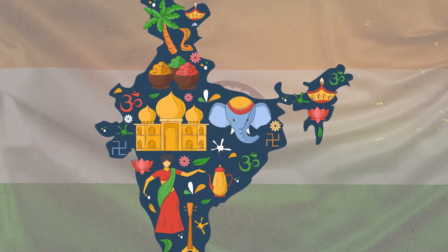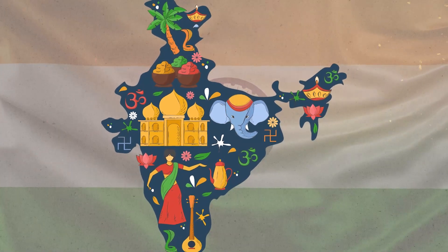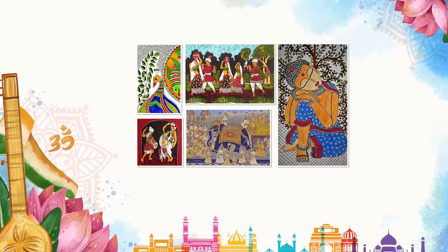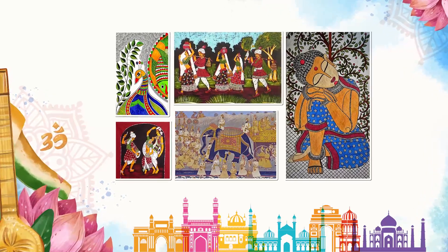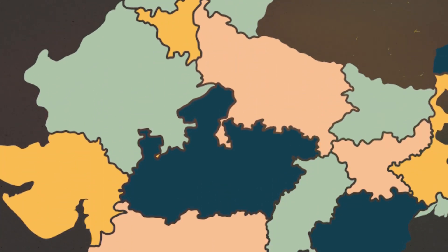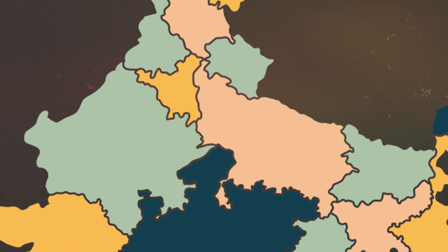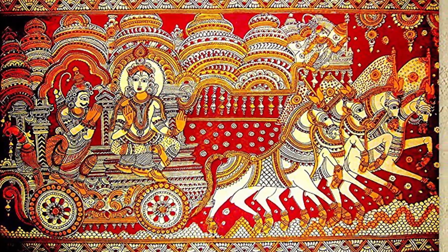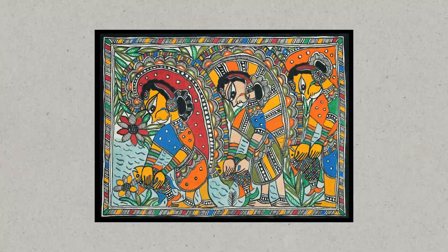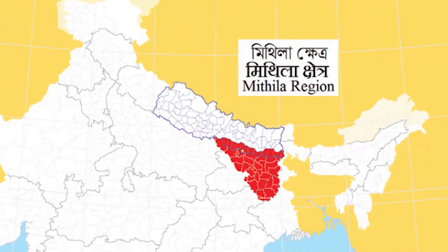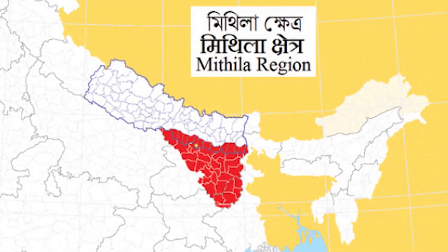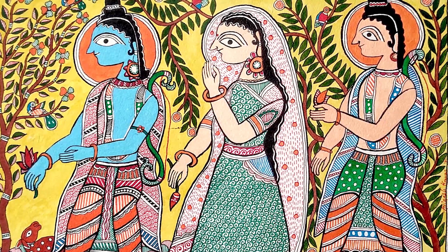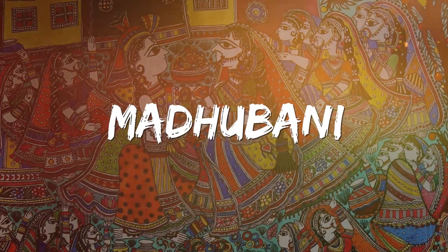Indian culture has always had deeply ingrained roots and a spiritual connection with art. The various distinct regions and areas of India have given birth to various styles of paintings. The Mithila region, which is in modern day Bihar, gave birth to a famous style of painting that is now called Madhubani.